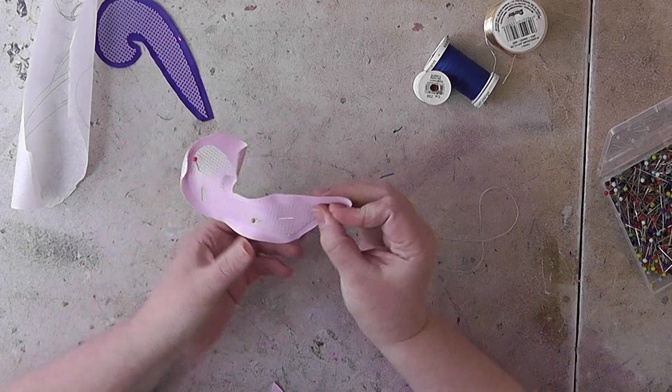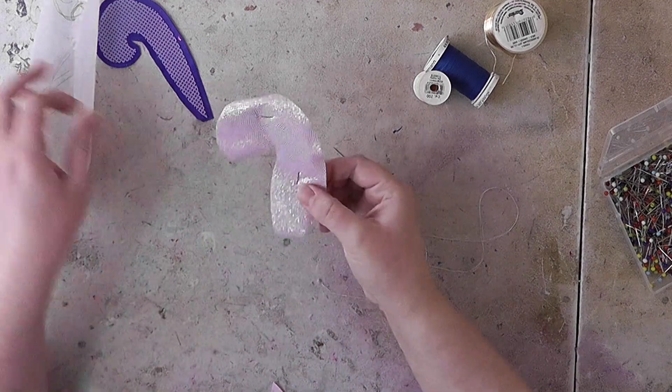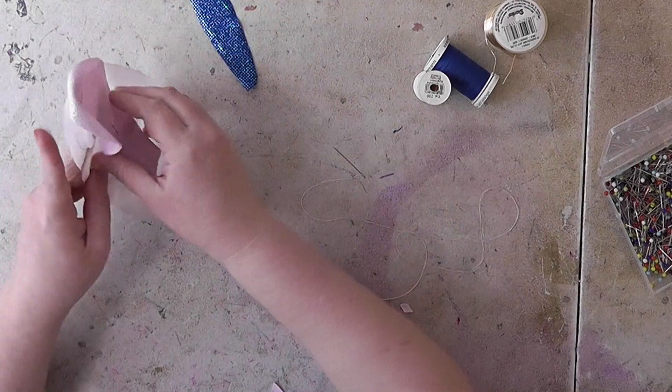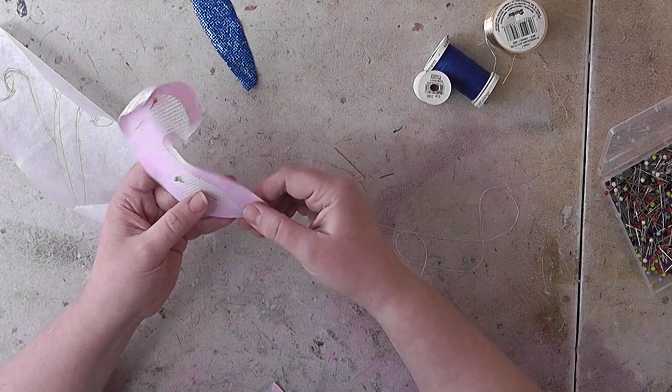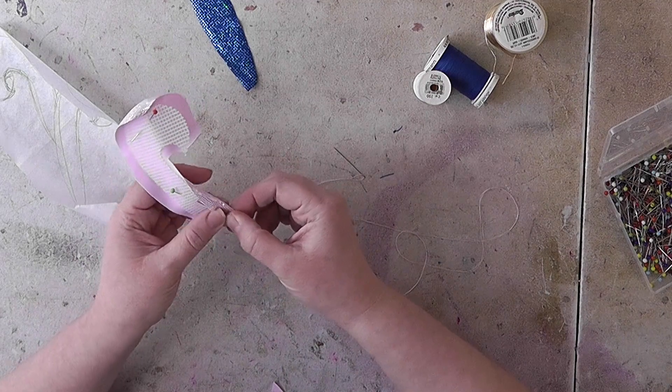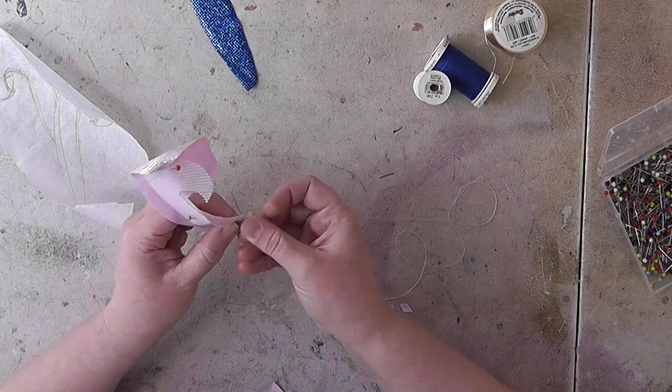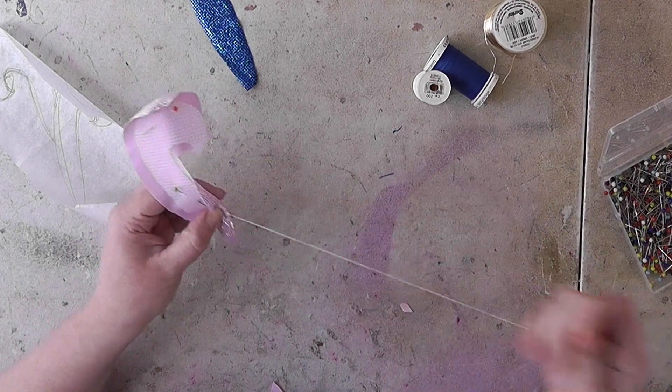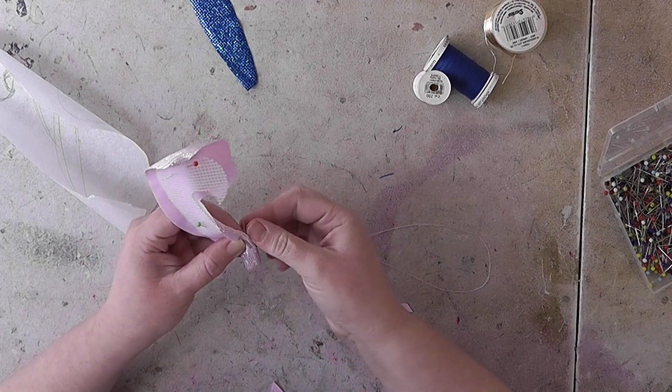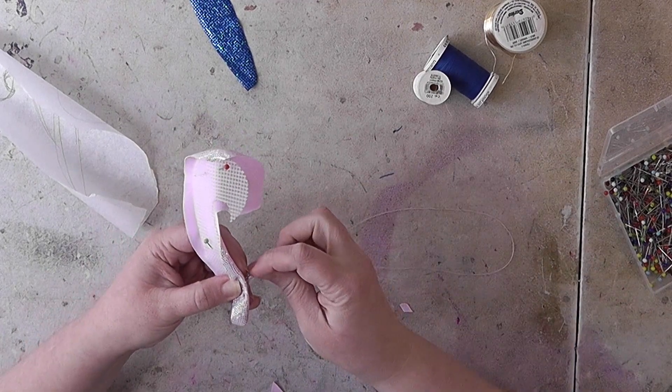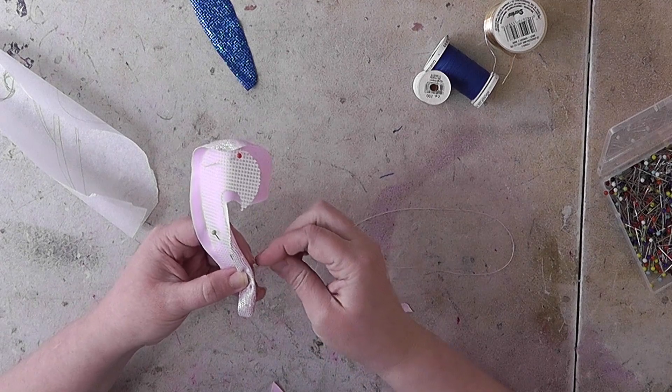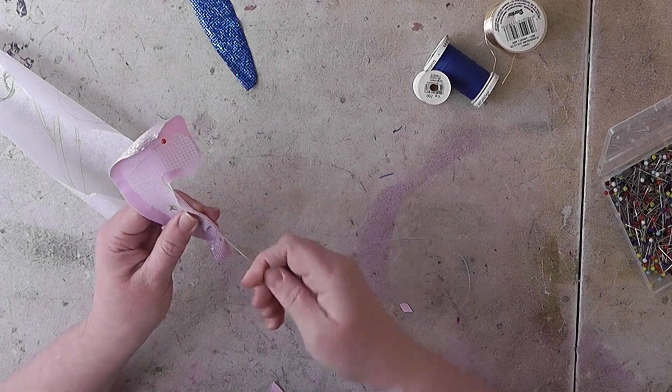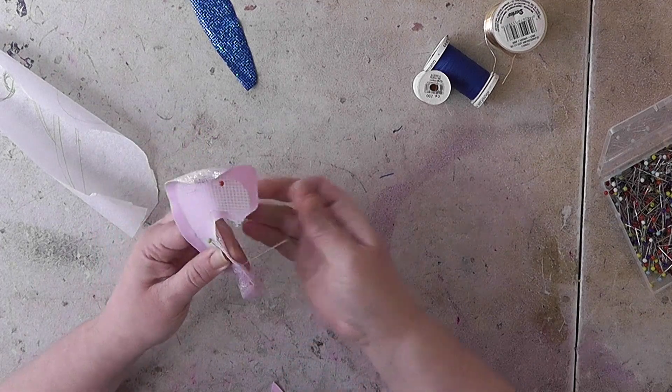I'm going to sew this on. This is the one that has an overlap. This will be this way and this one will be that way. I'm going to start at one of the edges that will become an overlap underneath the other one just to keep it neat. You just sew through the plastic canvas while holding the spandex tight down against the plastic canvas. Keep pulling it tight as you go. That's just a straight stitch.